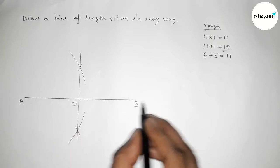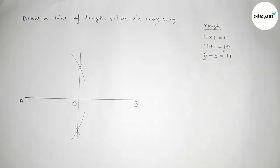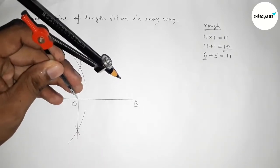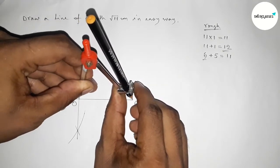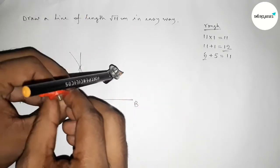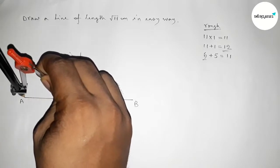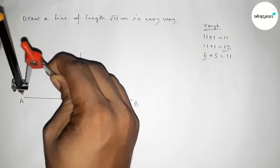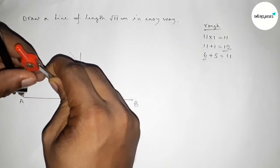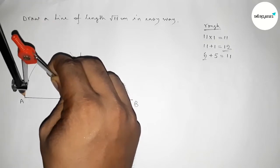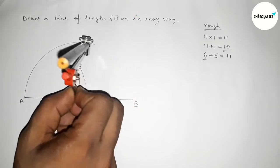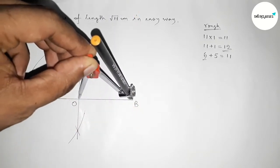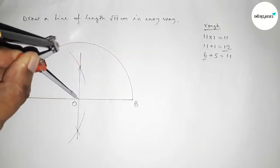The lengths OA and OB are equal, and this is 6 centimeter. Now taking the length OB and OA to draw a semicircle through the points A and B, drawing here a semicircle by this way.